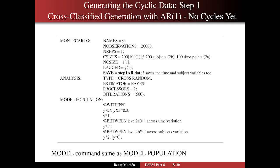What I did was use M+ simulations with a two-step generating approach. I'll do a cross-classified random analysis with 200 subjects at 100 time points, one person per cell. I'll have a lagged Y variable. The model is: within, Y on Y-lag-1, a fixed autoregressive coefficient of 0.3, variance on within of 0.5, and across-subjects variance of 2. The model command for the analysis is the same as the population model.